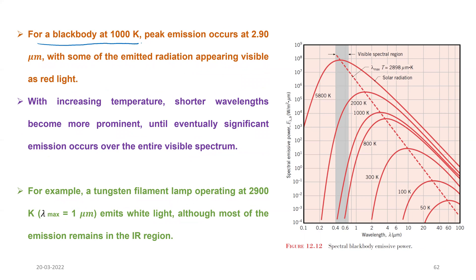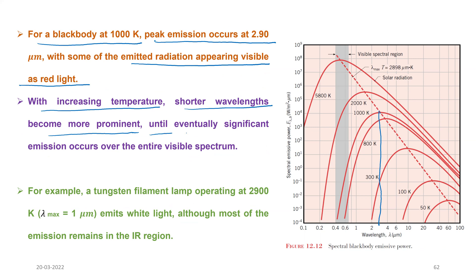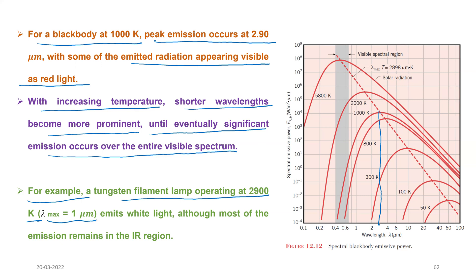For a black body at 1000 K, the peak of emission occurs at 2.9 μm, appearing as red light. With increasing temperature, shorter wavelengths become more prominent until significant emission occurs over the entire visible spectrum. For example, a tungsten filament lamp operating at 2900 K has λ_max approximately equal to 1 μm, although most of the emission remains in the infrared region.